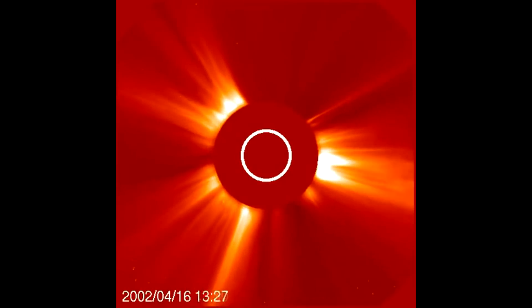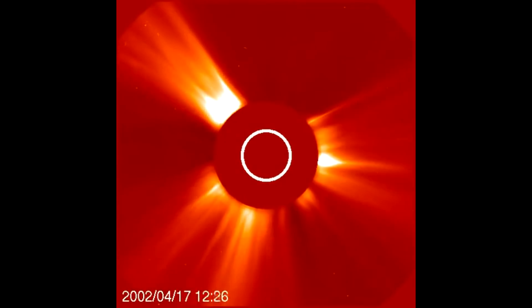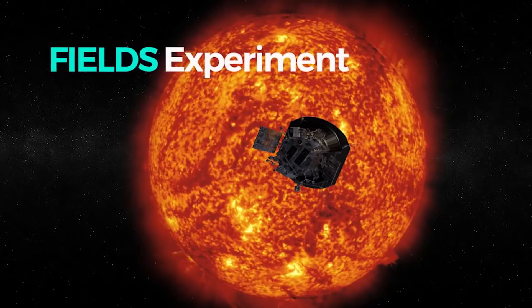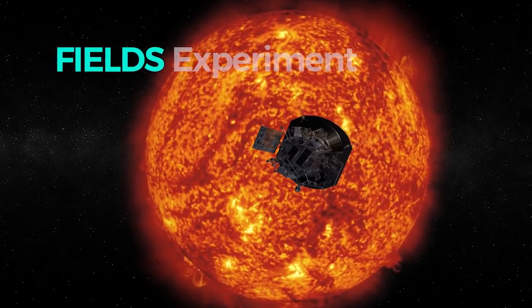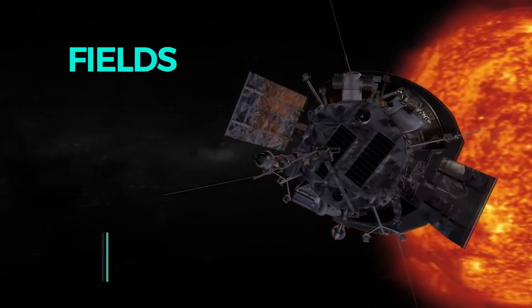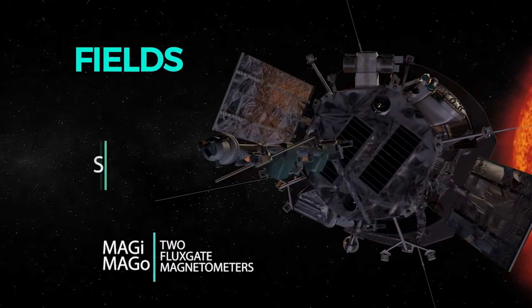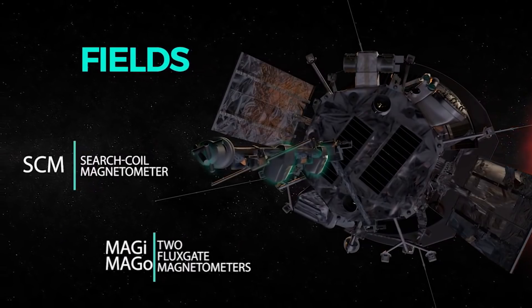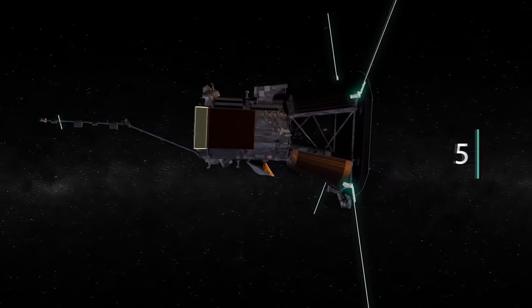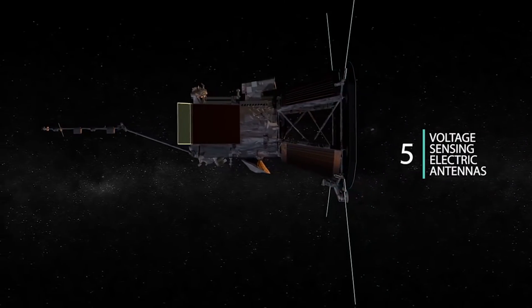But of course, being in there means you can measure things like electric and magnetic fields. There are ways to detect these remotely, but the spacecraft has the FIELDS experiment. It has a magnetometer which sits up on a boom behind the heat shield. And it also has a set of voltage sensors looking at the electric field that extend out sideways from the heat shield. And these let us get in situ measurements.